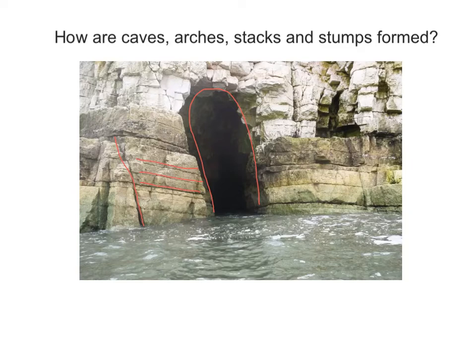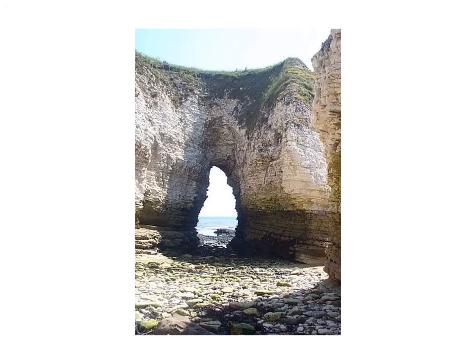Now if the cave becomes deeper into the cliff, and the cliff is actually part of a headland, then an arch will be formed. Here is an arch which has been formed at a headland when the cave has eroded through. The arch will continue to widen and it will continue to increase in height by the power of the waves coming in at high tide — hydraulic action.